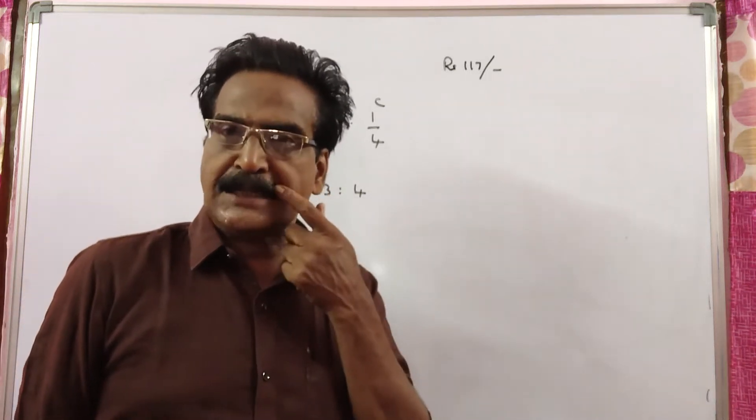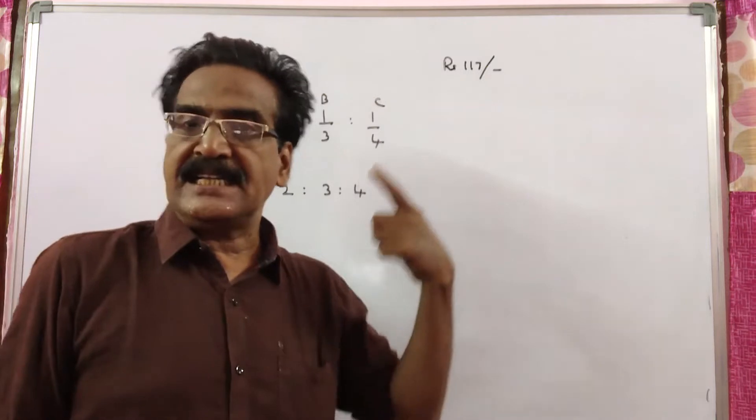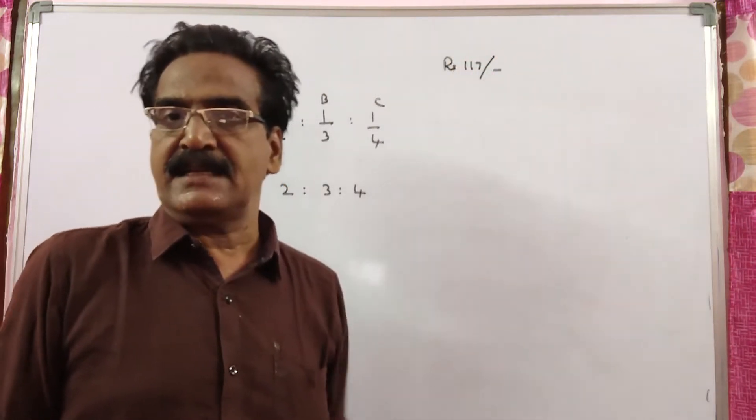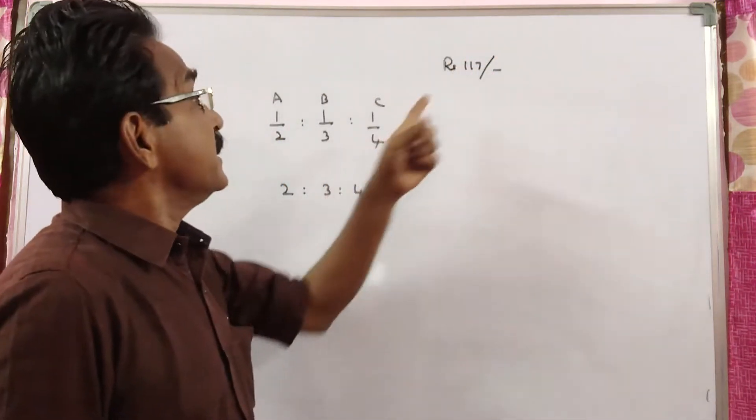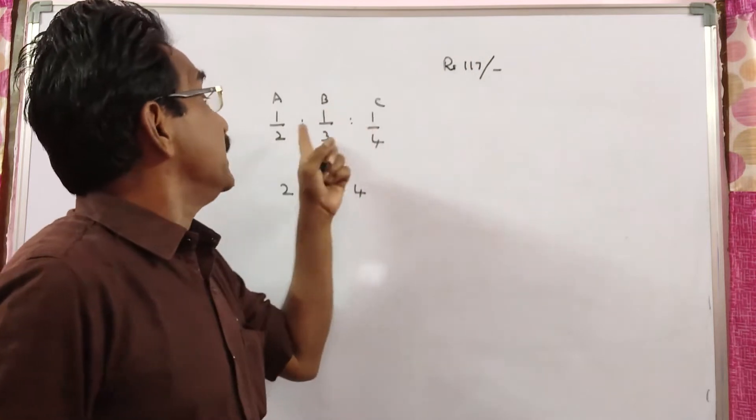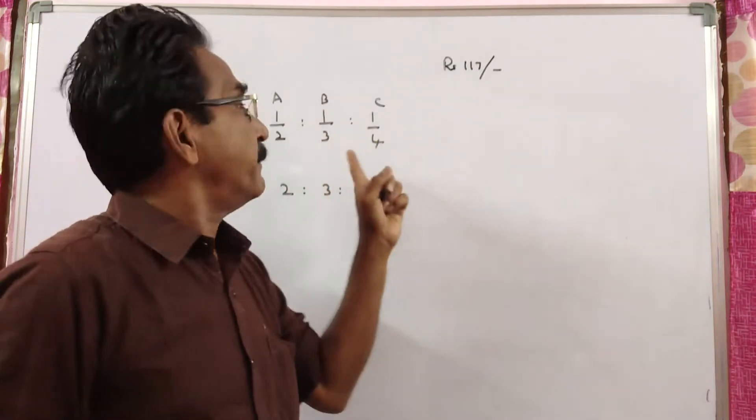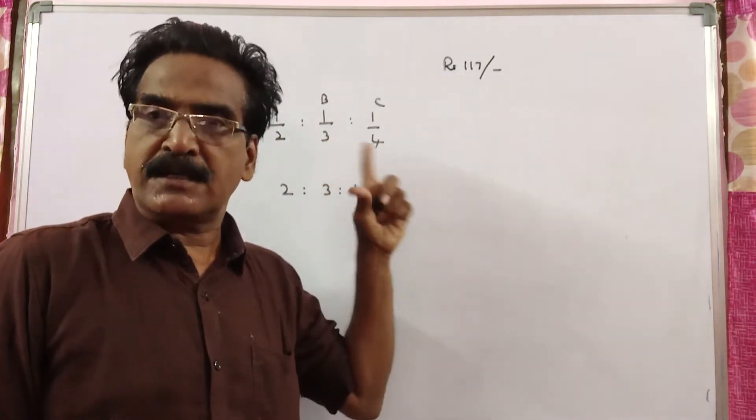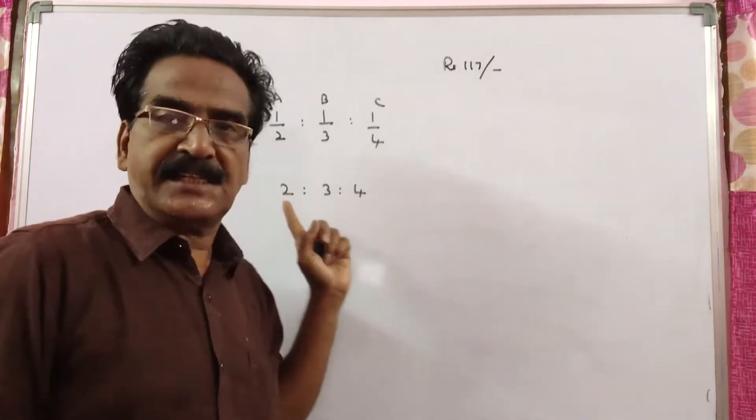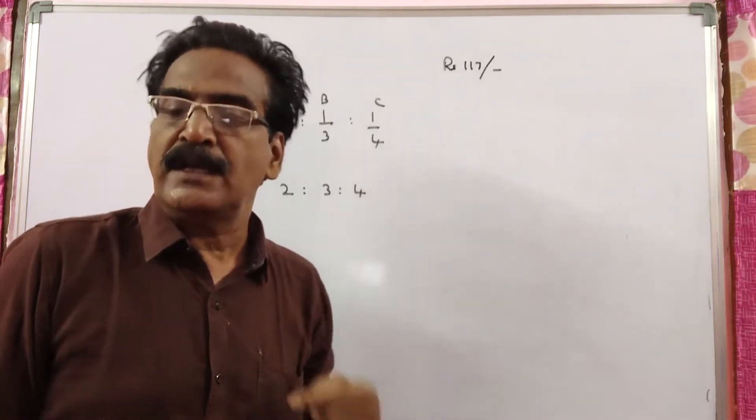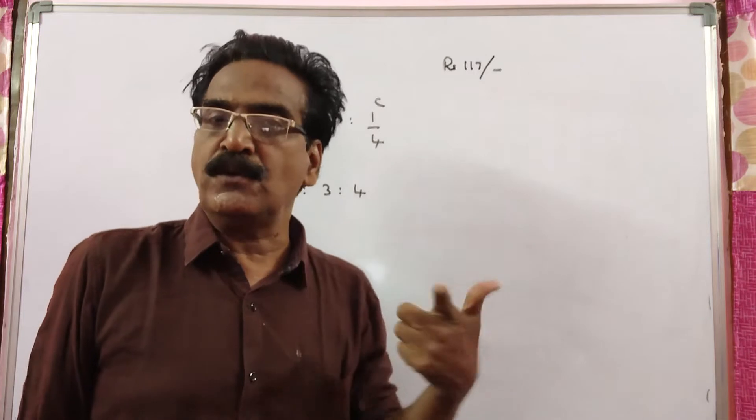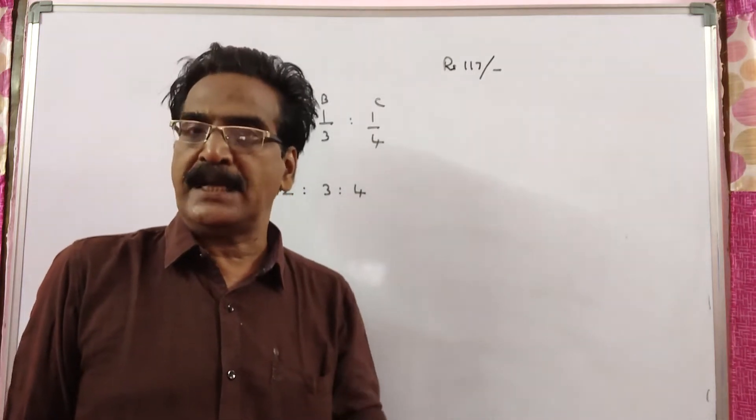Hi friends, good morning. Please look at the next problem in addition proportion. See friends, rupees 117, instead of dividing in the ratio 1/2 : 1/3 : 1/4 among A, B, C, it was divided in the ratio 2:3:4. And here the question is, who gains the most and by how much?